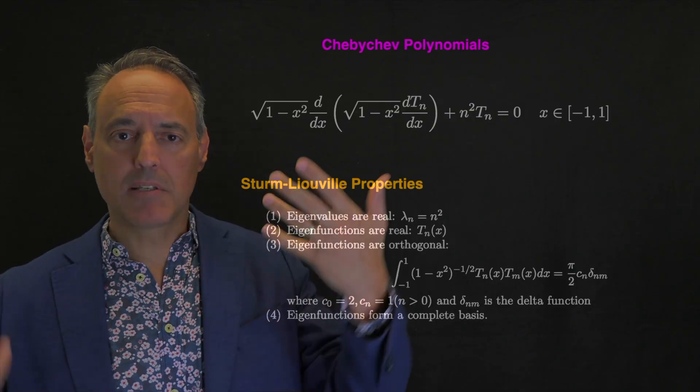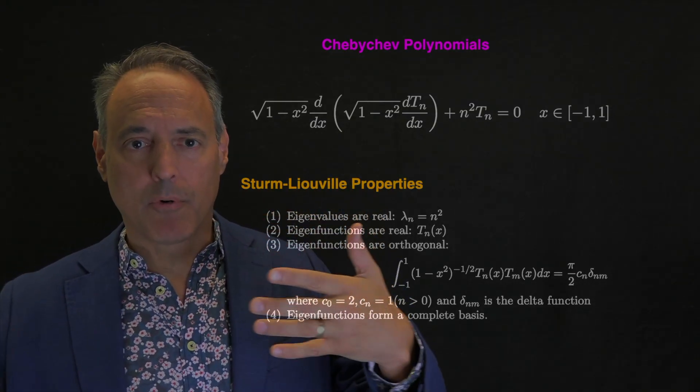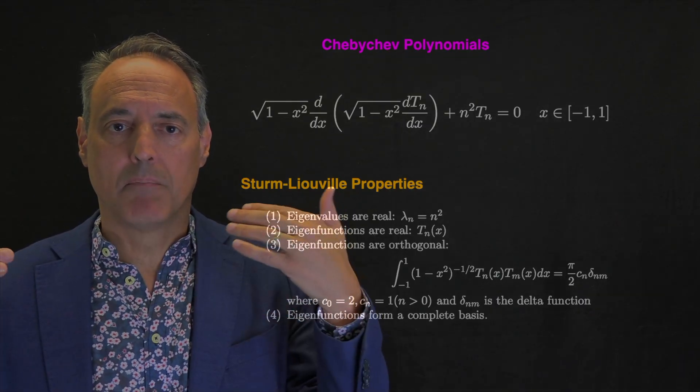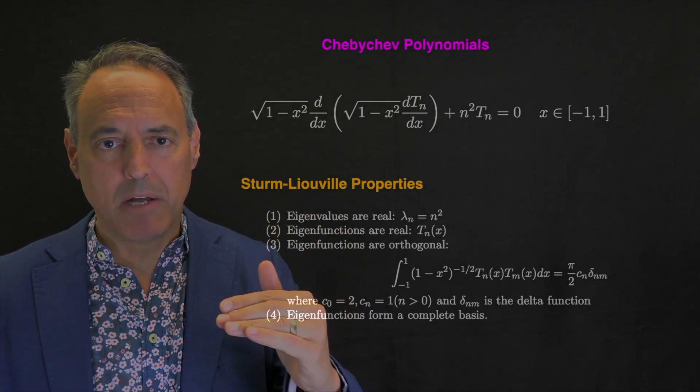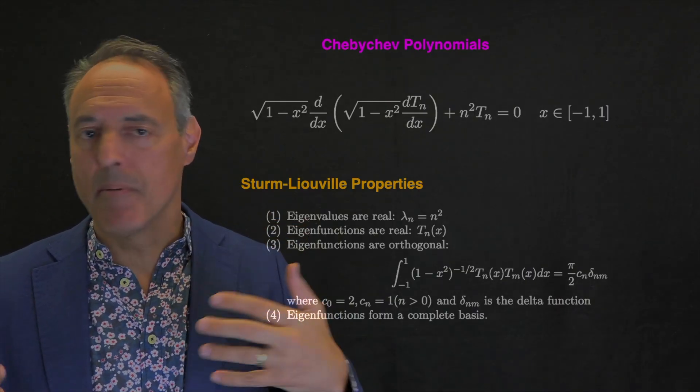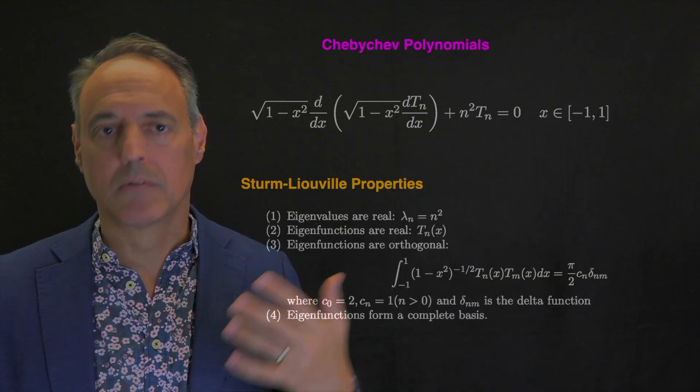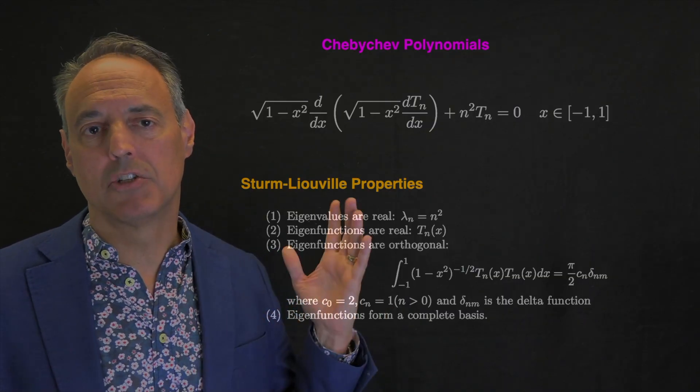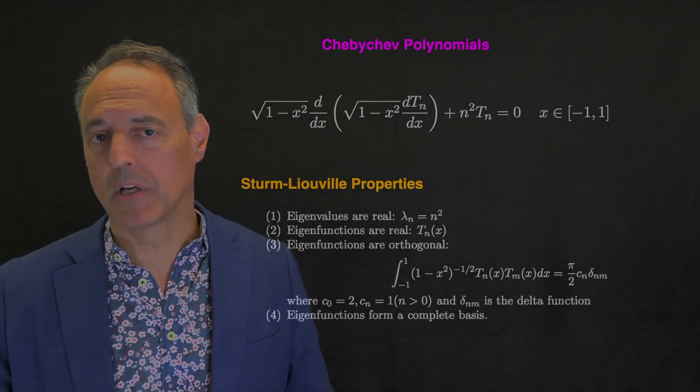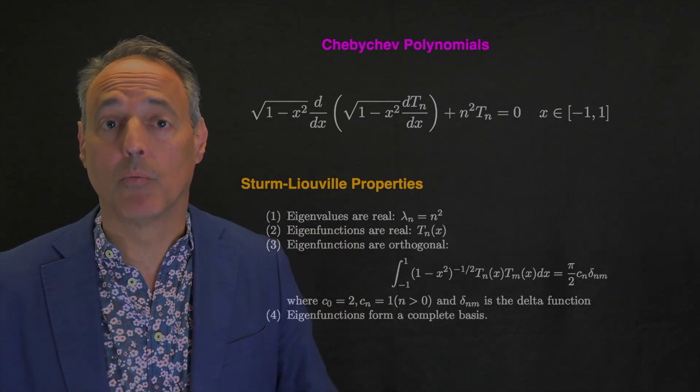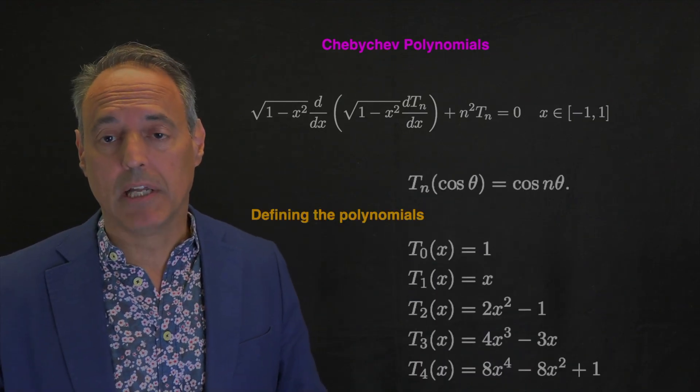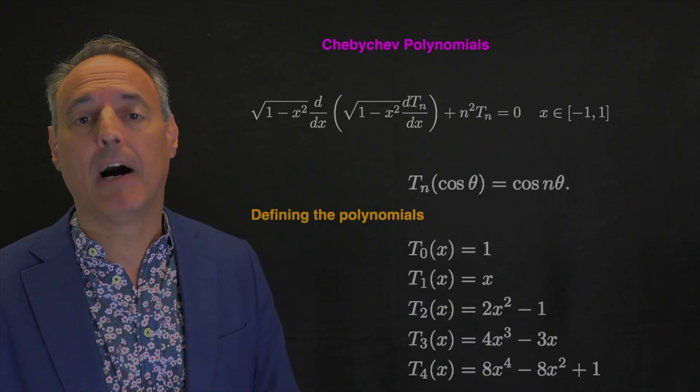You get all the properties from a Fourier expansion, but now using functions which allow broader representation of boundary conditions. The biggest problem with the Fourier transform is it can only represent periodic, pinned, or no flux boundary conditions. That's not a lot of capability for handling boundary conditions. Chebyshev allows you to broaden the class of boundary conditions.